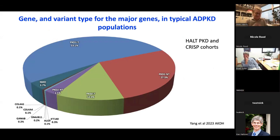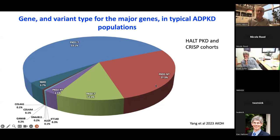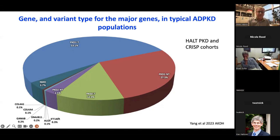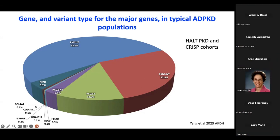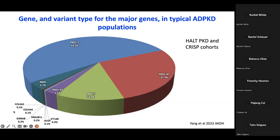Looking at a combination of the HALT clinical trial population and the CRISP observational trial population, about 80% are accounted for by PKD1 truncating or non-truncating changes, about 15% by PKD2 truncating or non-truncating, and around 4% remain unresolved. We also see a smattering of other genes including collagen 4A4 — normally associated with Alport syndrome but with recent descriptions of cysts as a major phenotype — and the HANAC collagen gene, where there is limited evidence of association with a cystic phenotype.